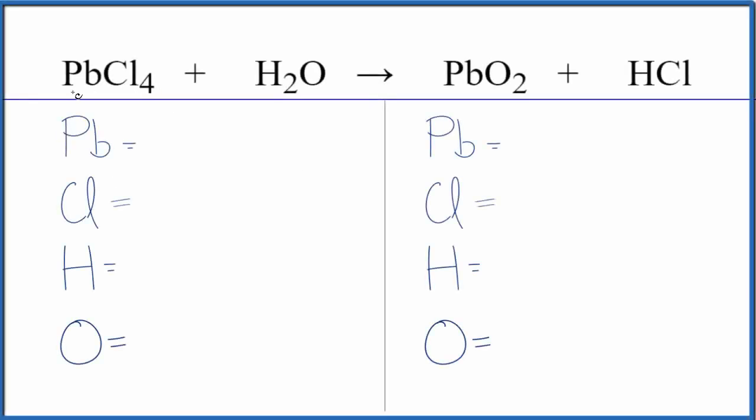To balance this equation we have PbCl4 plus H2O. This is lead 4 chloride plus water. Let's count the atoms up and balance the equation.